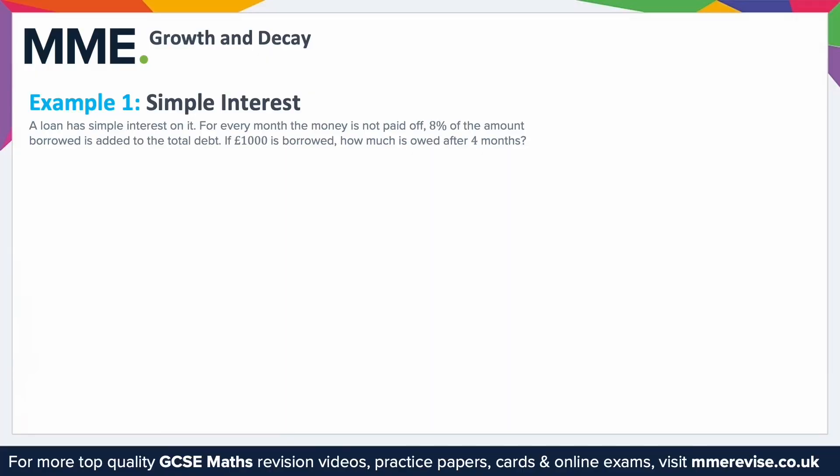Example one: simple interest. A loan has simple interest on it — for every month the money is not paid off, eight percent of the amount borrowed is added to the total debt. If one thousand pounds is borrowed, how much is owed after four months? There are a couple of different ways you can think about this.